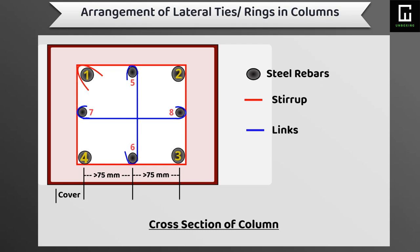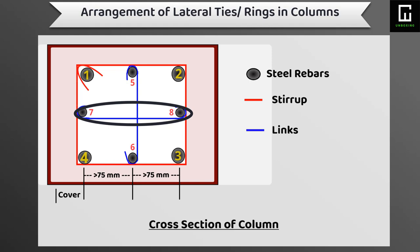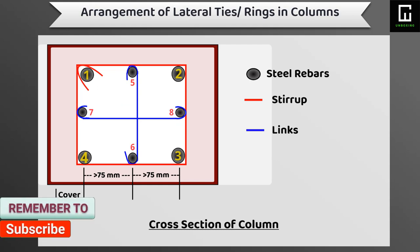Bar numbers five and six are connected with a regular size link, and bar numbers seven and eight are also connected with a regular size link. So for that type of cross-sectional column, we can provide just one regular size tie and two links only.